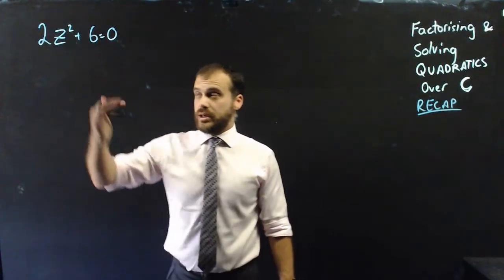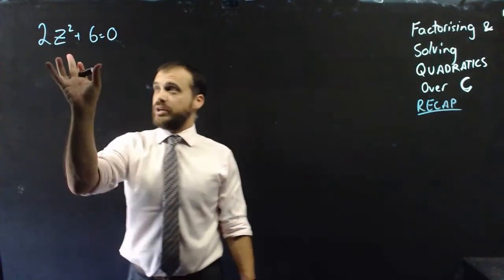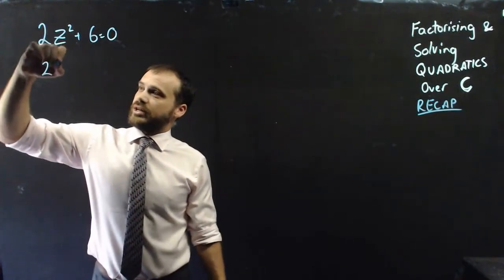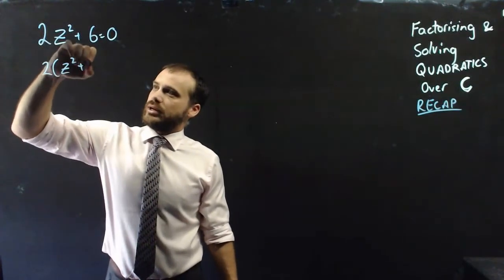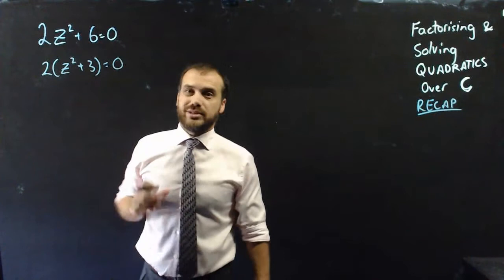Now, a very similar question here, and we can work in essentially the same way. First, I'll bring out a common factor of 2, and I'm left with something that looks like that.